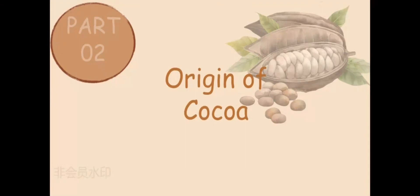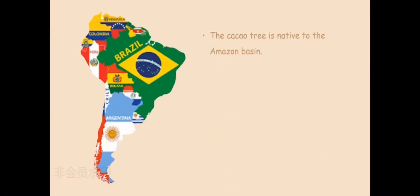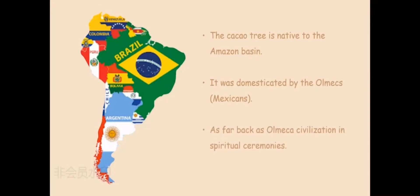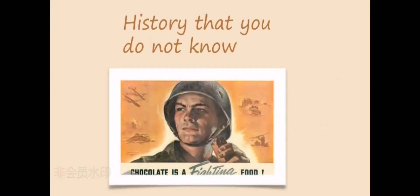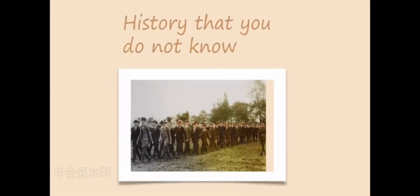The cacao tree is native to the Amazon basin. It was domesticated by the Olmecs of Mexico, as far back as Olmec civilization, in spiritual ceremonies. And here is some history you may not know: in 1905, Cadbury's company's main products were still coffee and tea, but nine years later the company's milk chocolate became a household name and the number one chocolate product in the UK.